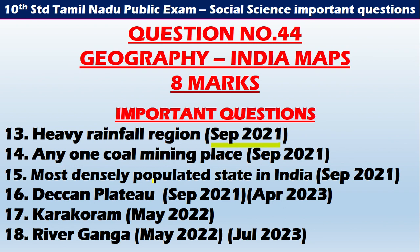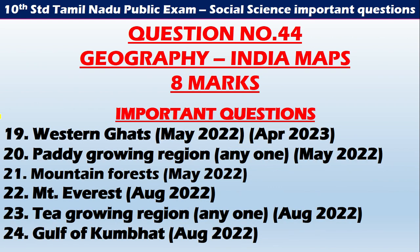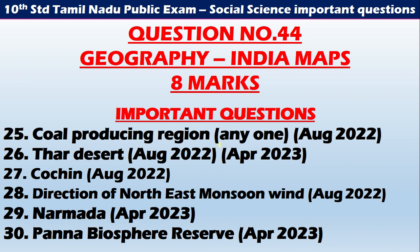Coal Mining Placer — Deccan Plateau. River Ganga — May 2020. Western Ghats — May 2022 and April 2023. Paddy growing region — May 2022. Mount Everest — August 2022. Tea growing region — August 2022. Gulf of Khambat — August 2022. Coal producing region — August 2022. Thar Desert — April 2023. Kochi — August 2022. Direction of Northeast Monsoon Wind — August 2022. Narmada — April 2023. Panna Biosphere Reserve — April 2023.